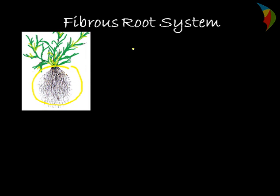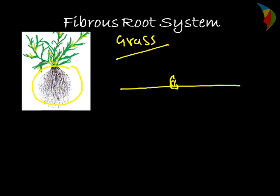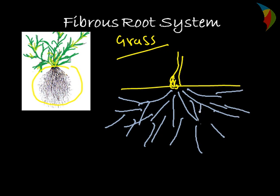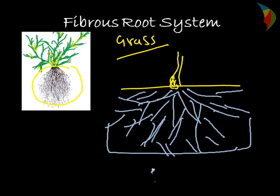The main example of the fibrous root system is grass — all grass family species have this type of root system. In this case, the seed is there, the radicle branches, and forms a tuft of roots from the base of the stem. A lot of roots come out from the base of the stem in a hairy form, so this complete structure forms a fibrous root system.